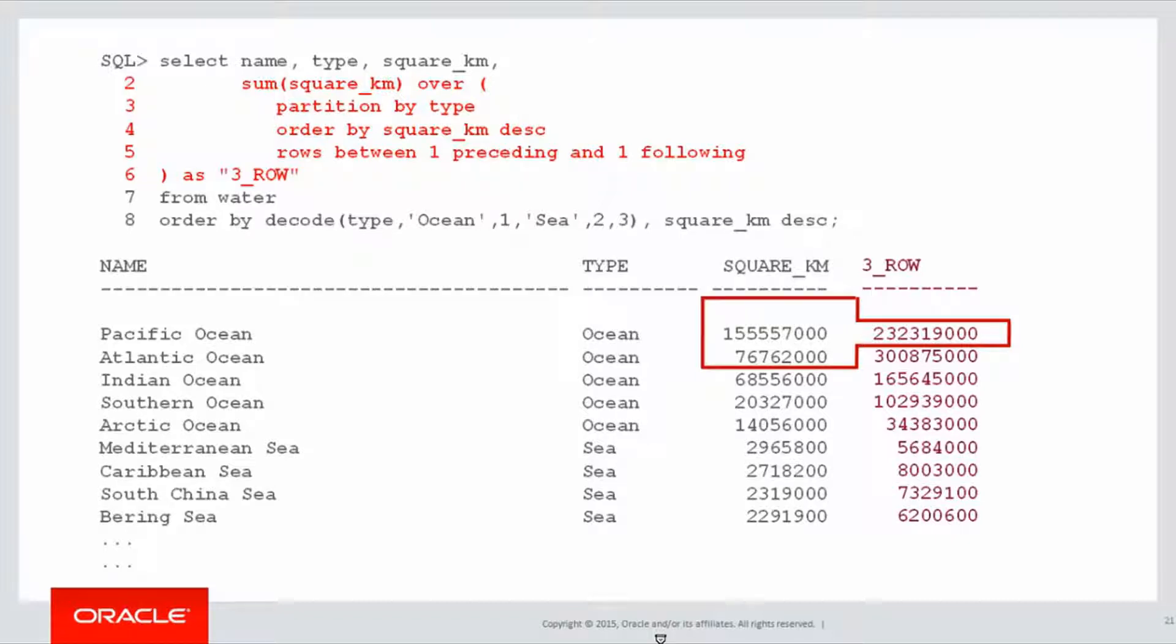There is the current row for Pacific Ocean, 155 million square kilometres, and Atlantic Ocean. When we add those three together, one of them being null, we get 232 million, and there's our result in the three row table.